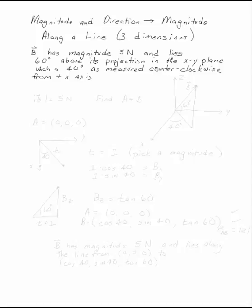B has magnitude 5 newtons and lies 60 degrees above its projection in the xy plane, which is in itself 40 degrees as measured counterclockwise from the positive x-axis. Change this into magnitude along a line.